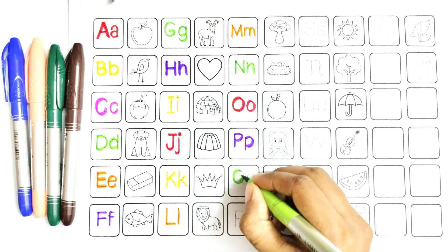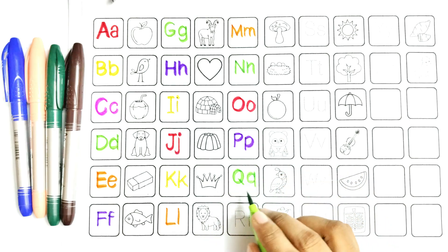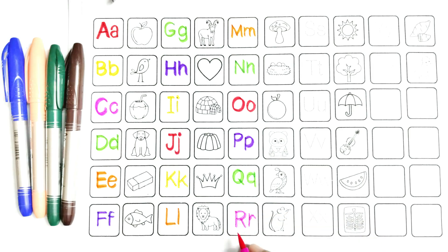P, say with me: P is for coil. Q, say with me: Q. R, say with me: R, R is for red.